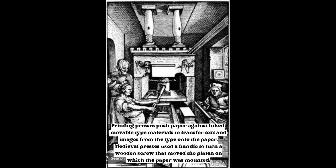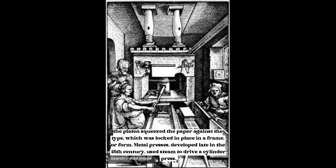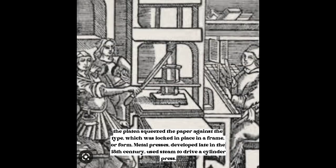Printing presses push paper against inked movable type materials to transfer text and images from the type onto the paper. Medieval presses used a handle to turn a wooden screw that moved the platen on which the paper was mounted. The platen squeezed the paper against the type, which was locked in place in a frame or form. Metal presses, developed late in the 18th century, used steam to drive a cylinder press.